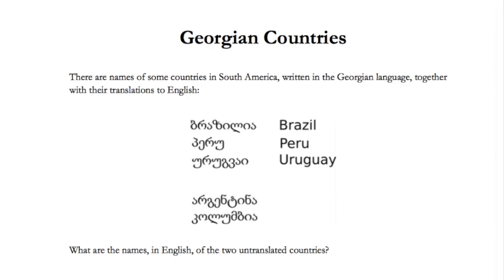We can start with similar letters in the question. The letter that appears the most is U — in Peru and Uruguay. We can identify that this symbol is U. Then we take a look at Peru: there is one symbol to one letter. Similarly with Uruguay, we know R is this symbol.